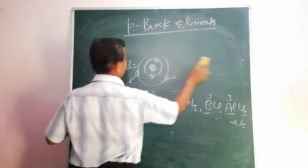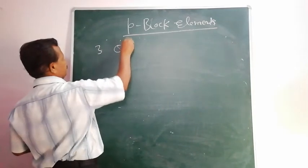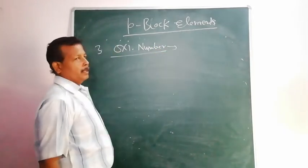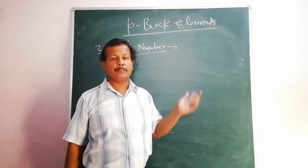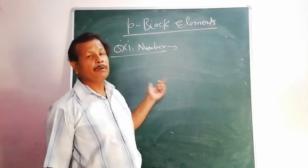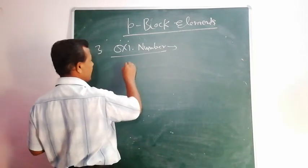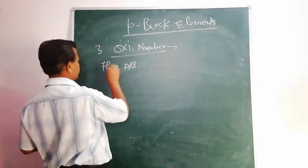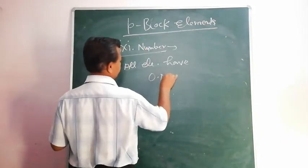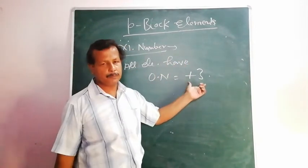Third: the oxidation number. In general, these elements release 3 electrons during a reaction with strong electropositive atoms, so they show a positive oxidation number of +3. In general, all these elements have an oxidation number equal to +3.